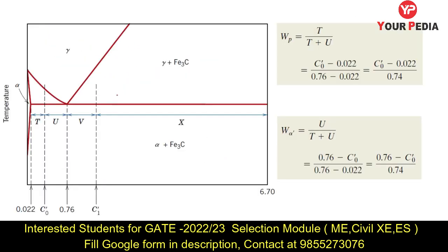Next, let's move to the iron-carbon diagram. This diagram shows a part of the iron-carbon diagram featuring the eutectoid point. The composition at the eutectoid point is pearlite. The eutectoid point in the iron-carbon diagram occurs at 0.76 percent carbon, and another key point is at 0.022 percent carbon.